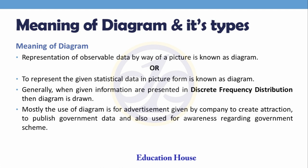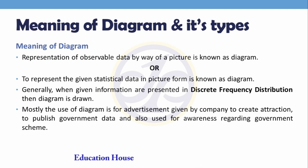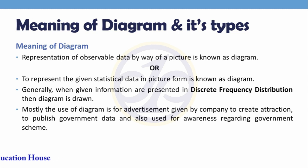Meaning of diagram and its types: representation of observable data by way of a picture is known as a diagram. When information is presented in discrete frequency distribution, a diagram is drawn. Diagrams are mostly used by companies for publishing different advertisements.